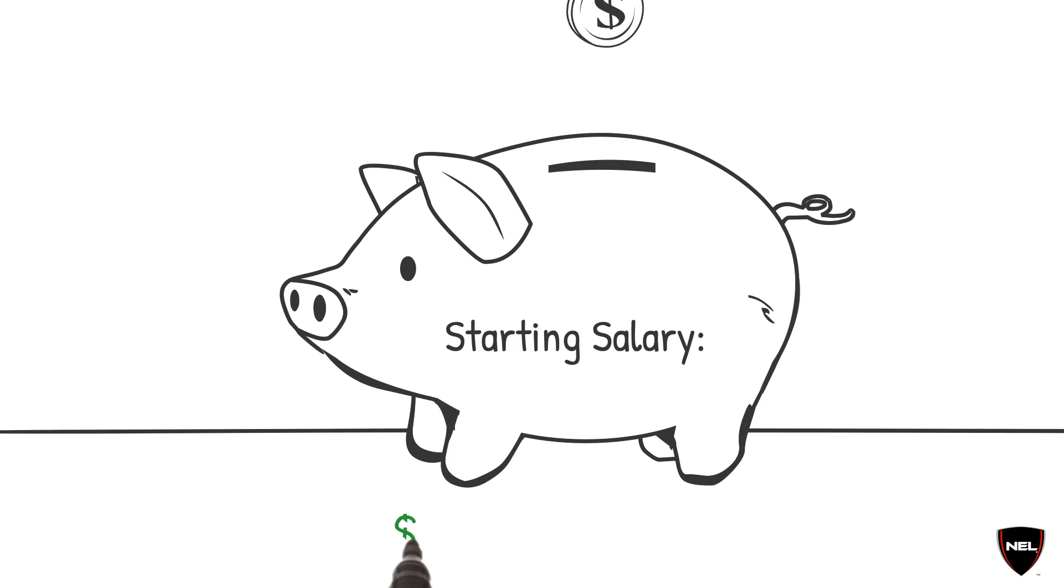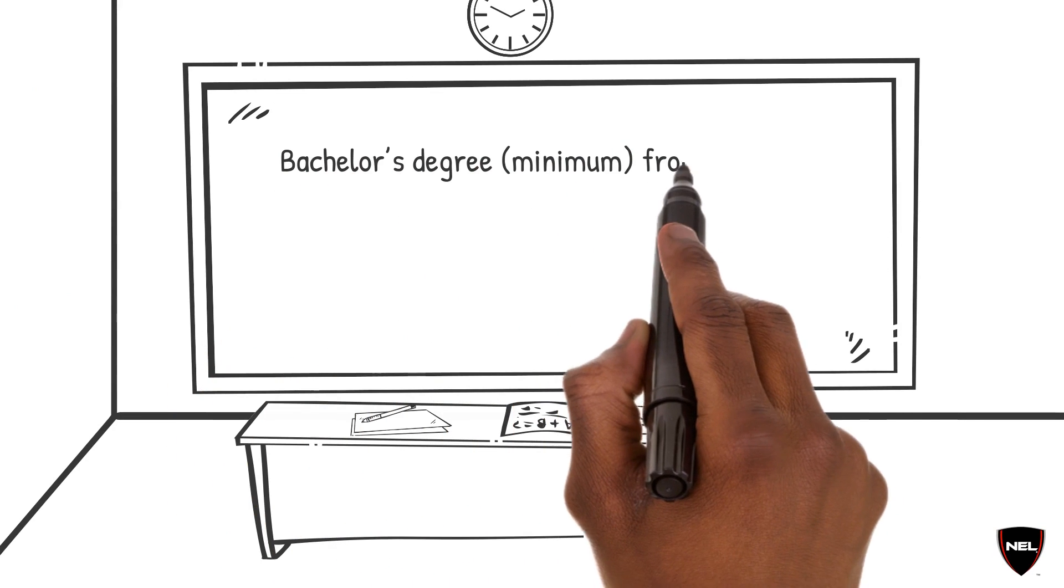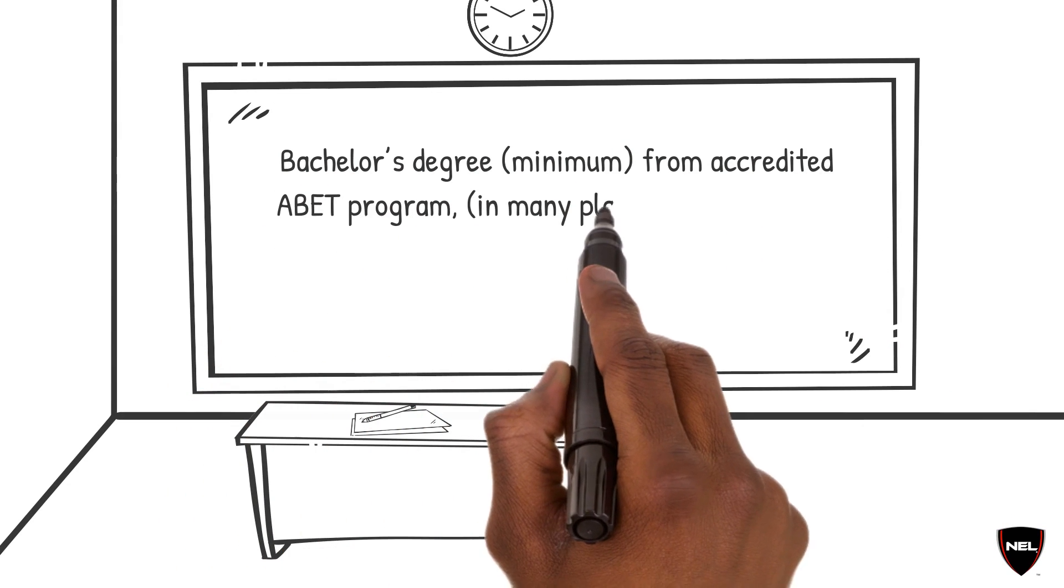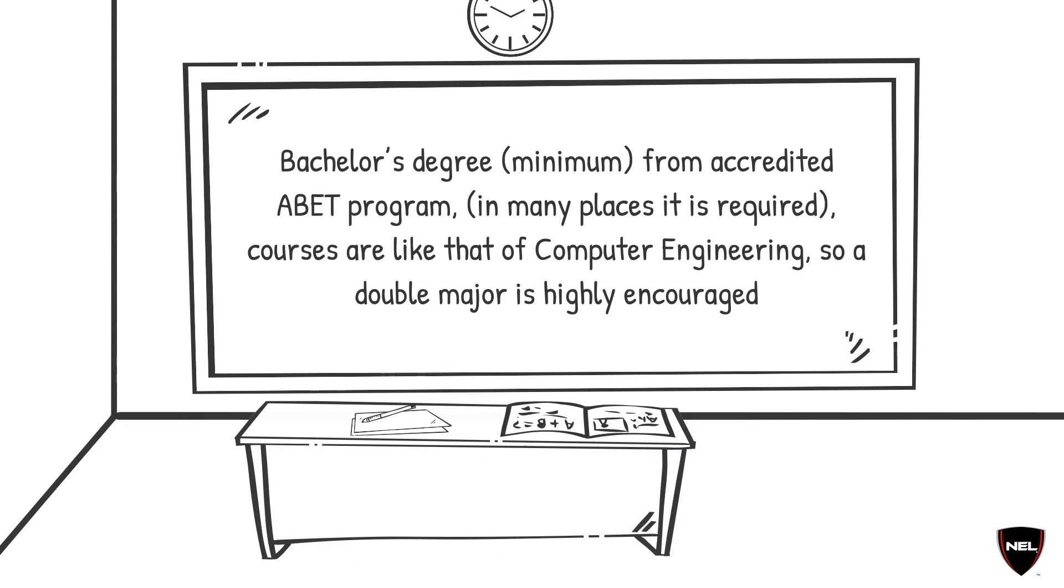Starting salary, $80,225 to $182,276. Bachelor's degree minimum from accredited ABET program. In many places it is required, courses are like that of computer engineering, so a double major is highly encouraged.